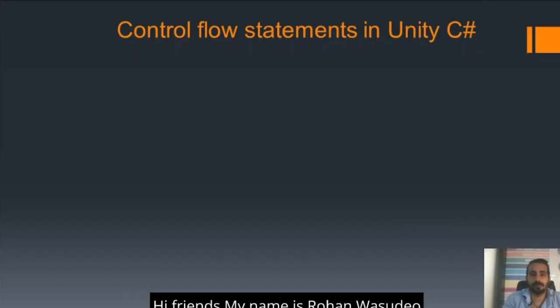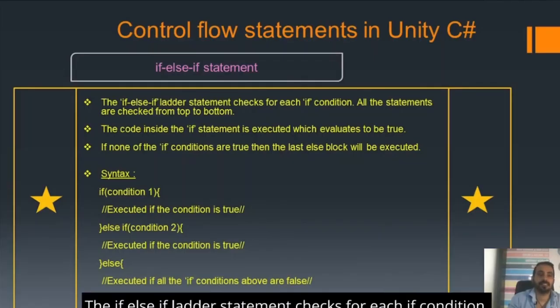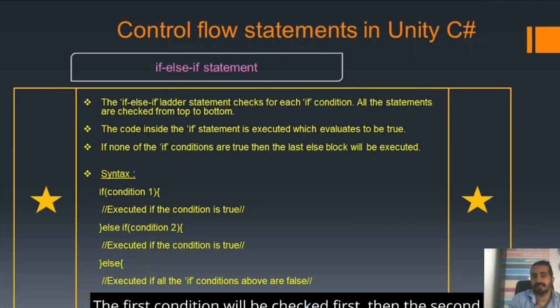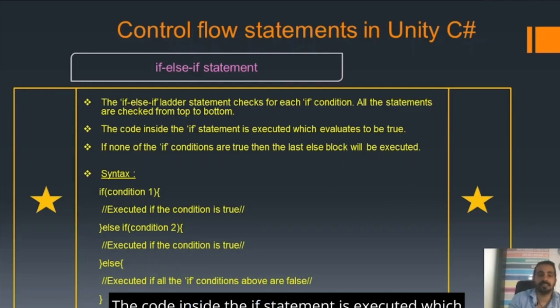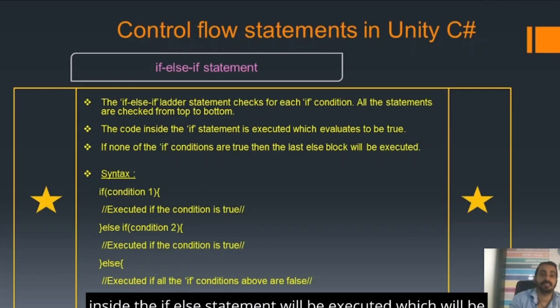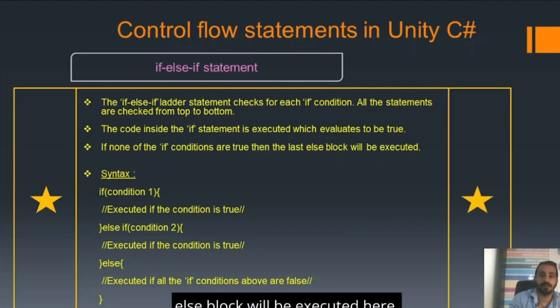My name is Rohan Vasudev, and in this session we are going to learn about control flow statements in Unity C-sharp. The if-else-if ladder statement checks for each if condition — all statements are checked from top to bottom. The first condition will be checked first, then the second, then it moves on to the third and so on. Only the block of code inside the if-else statement which evaluates to true will be executed. If none of the if conditions are true, then the last else block will be executed.